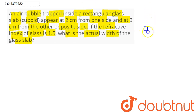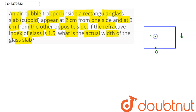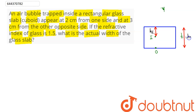Suppose this is our glass slab whose thickness is given as t. This is our object O. The image of this object as seen by an observer present in air will be at some height h_i from this surface, and the height of the object is given as the thickness of the glass slab, which is equal to t.